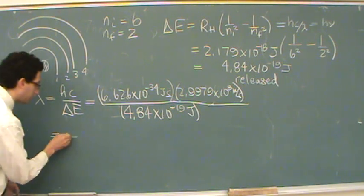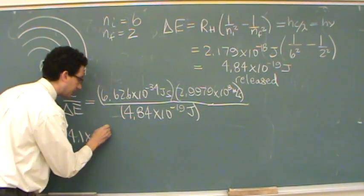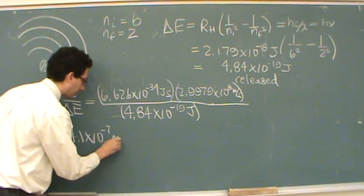Okay. 4.1 times 10 to the minus 7. 4.1 times 10 to the minus 7? Yes. Okay. So I guess that's meters.